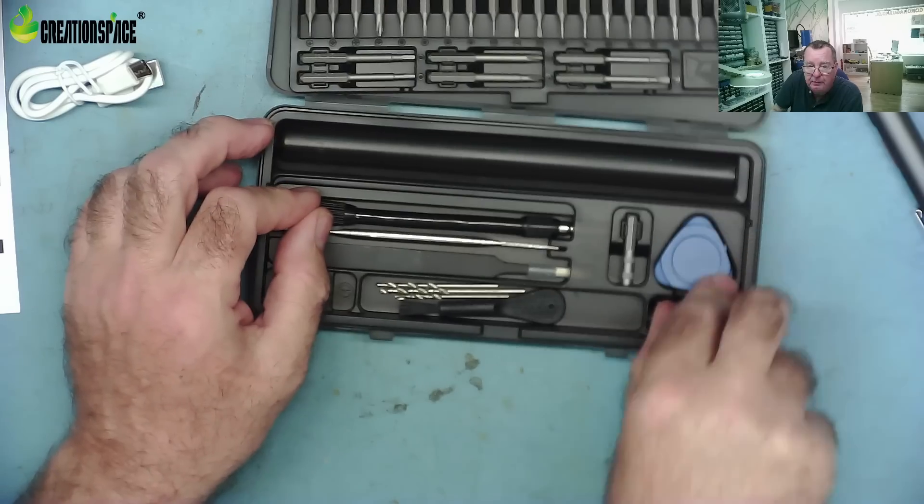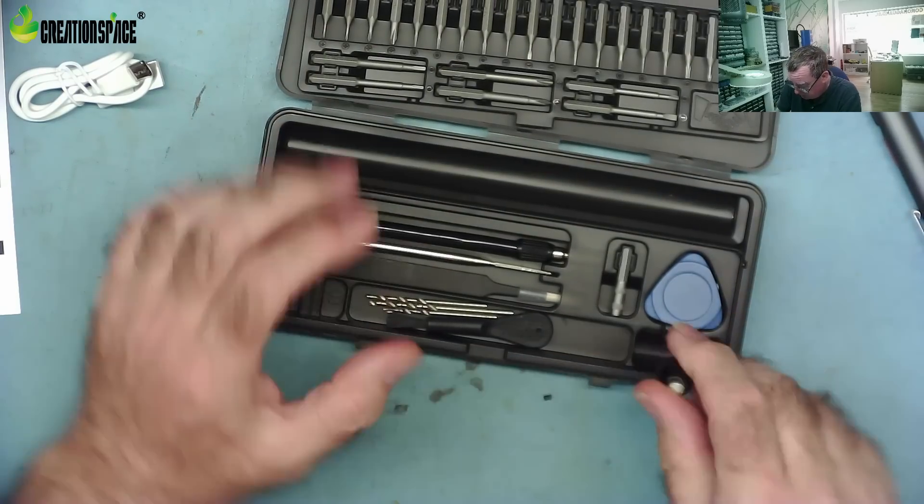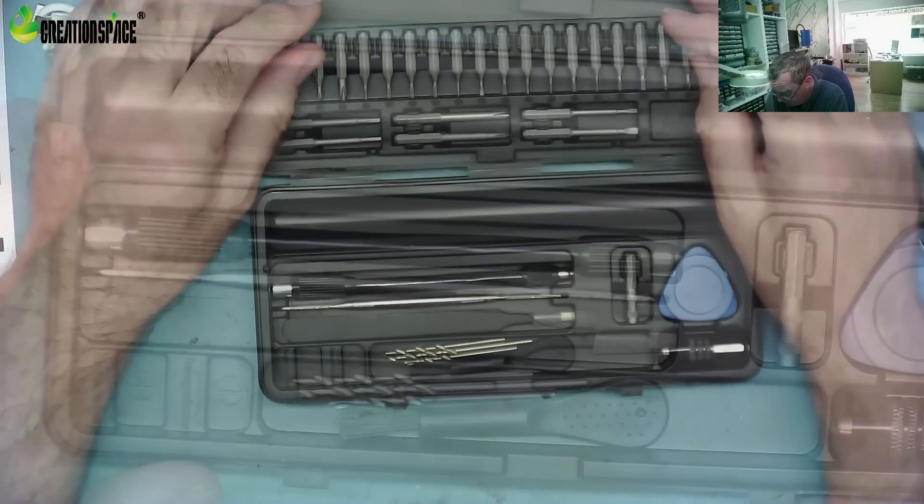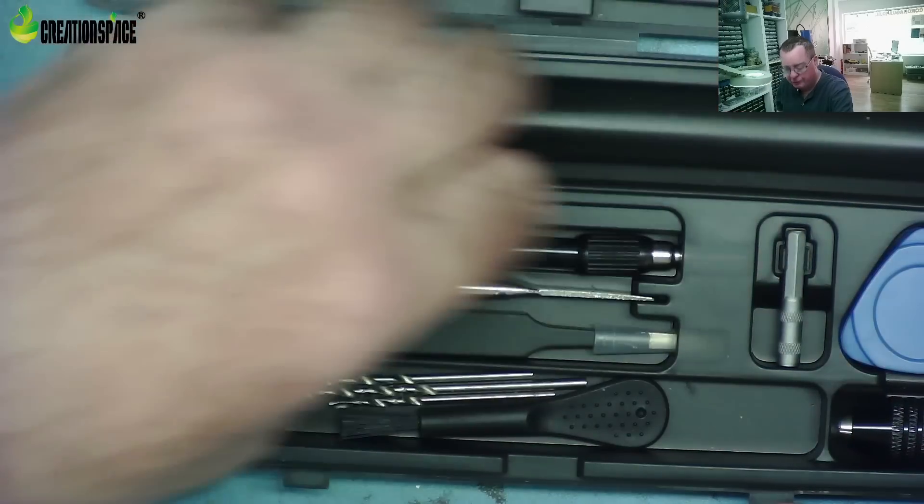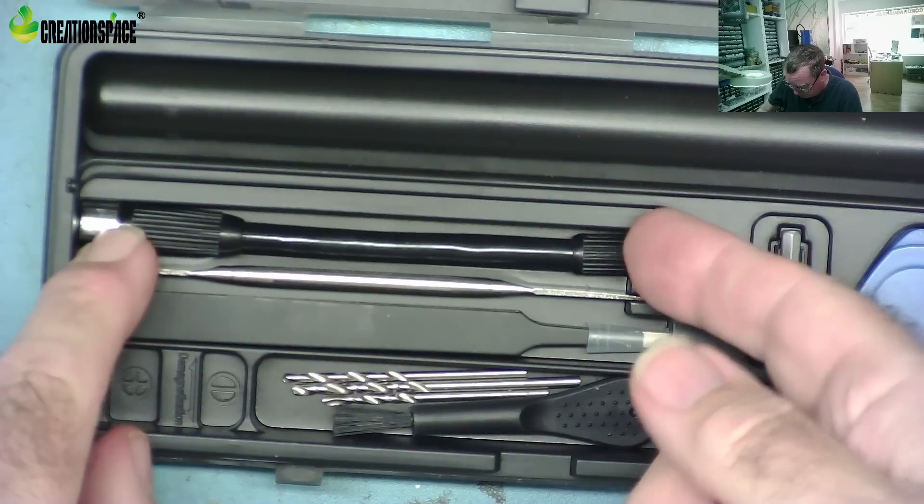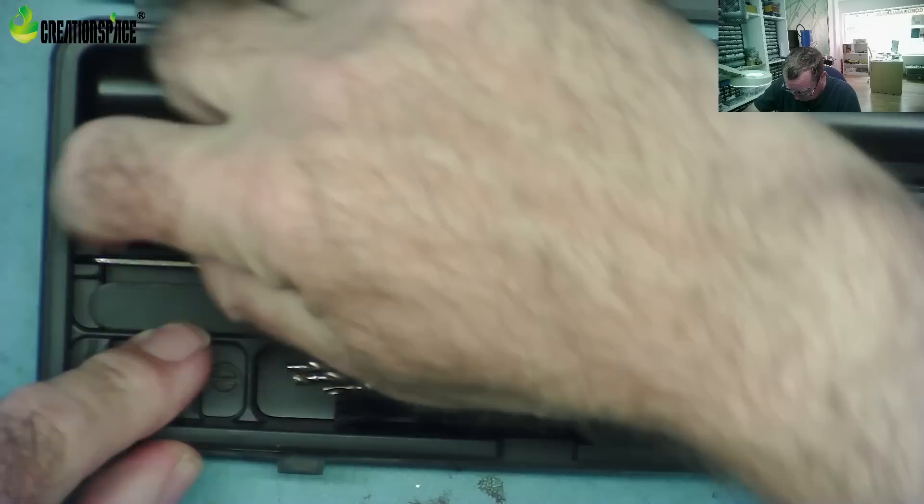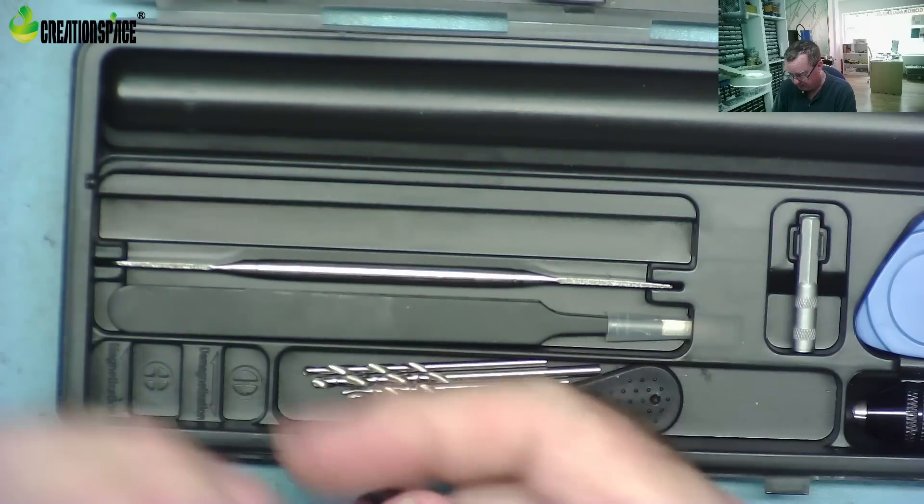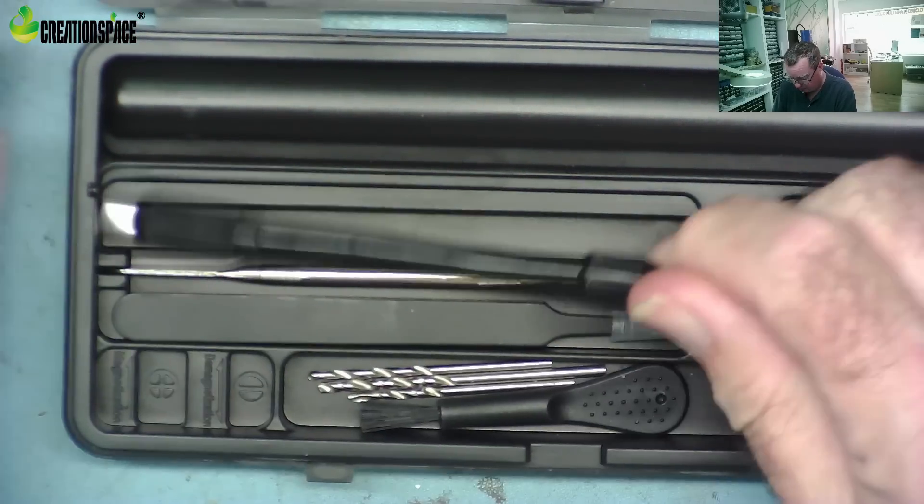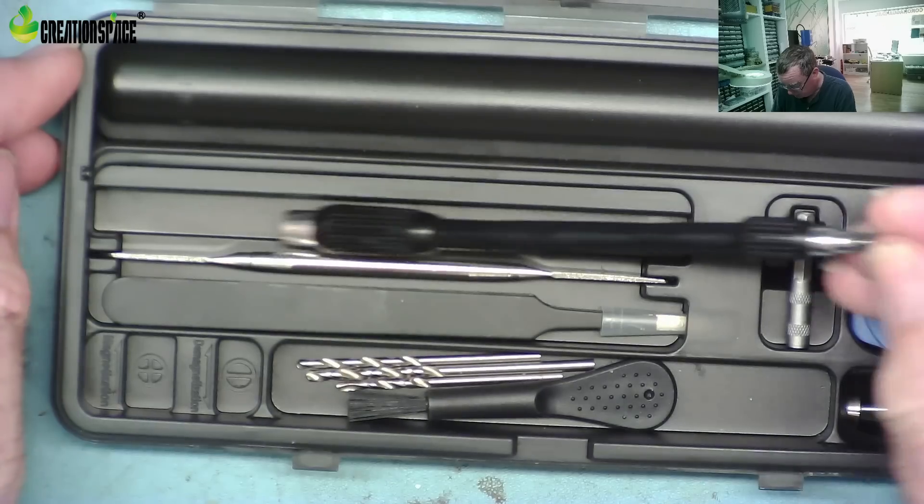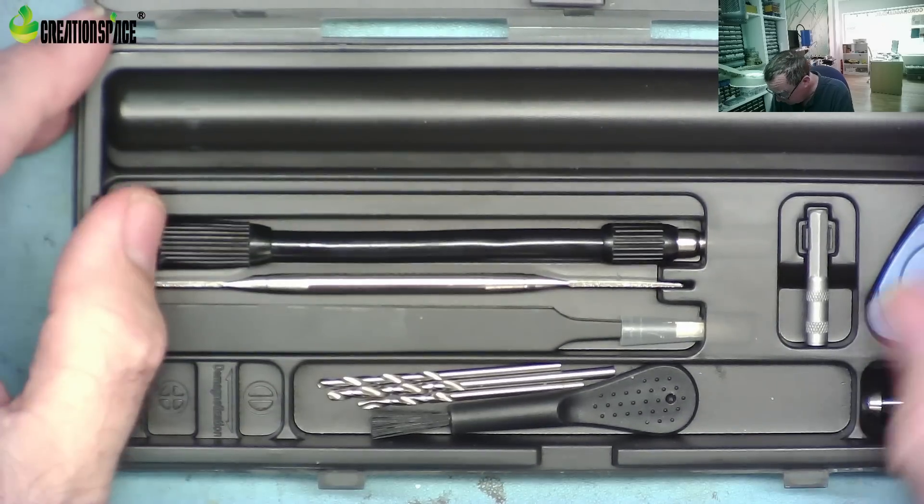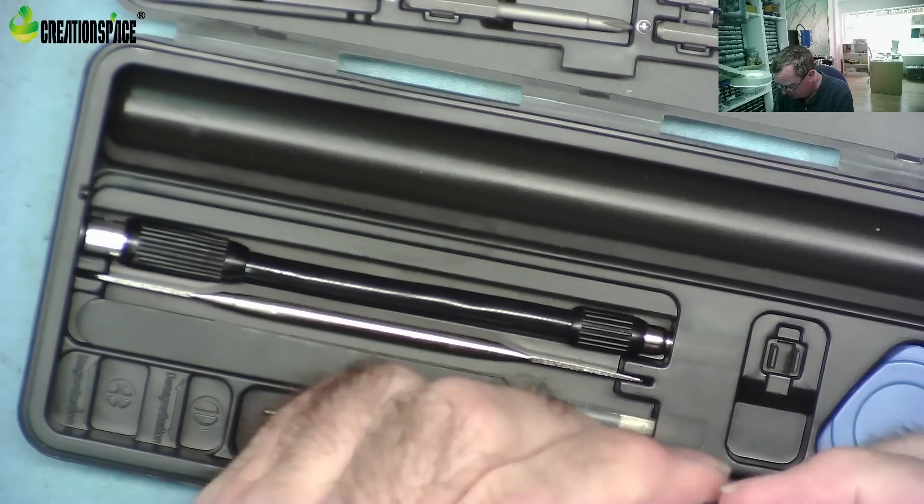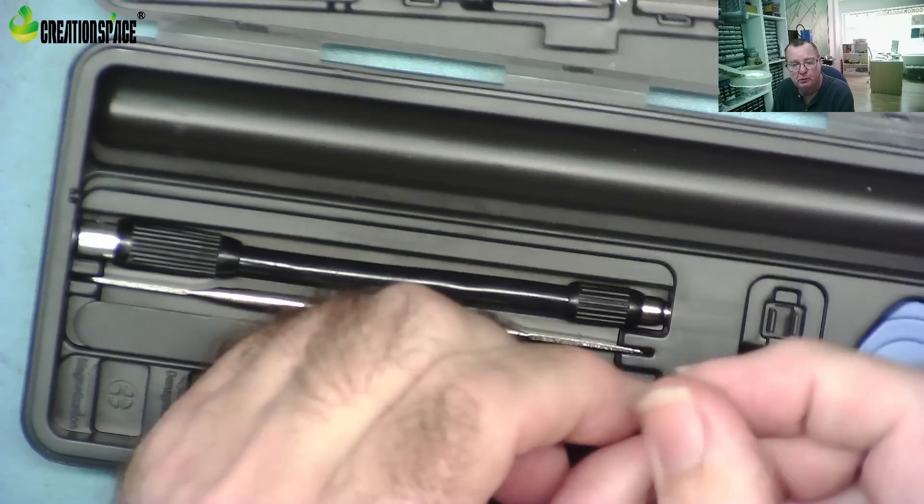We have the chuck for the drills, and we have a whole variety of screwdrivers. I've just noticed as well, I think this is the flexible shaft. Yeah, could be handy for getting into difficult places. That's quite nice. Small adapter, from larger to smaller sizes.